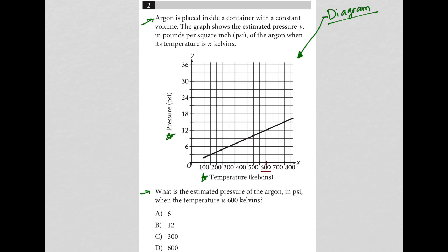So I go on the vertical line that represents 600. I make my way up to the line here. I make my way to the left to my pressure axis here, and it tells me that the pressure is 12 PSI, and therefore the correct answer here is B.